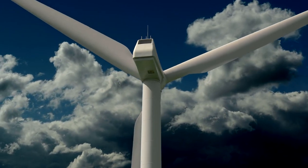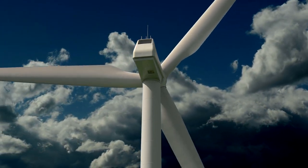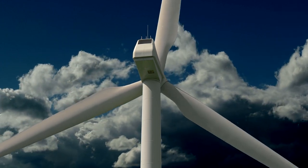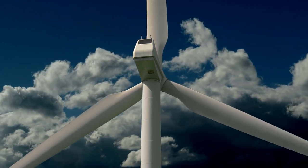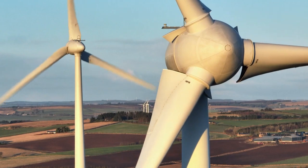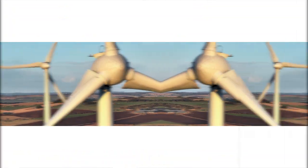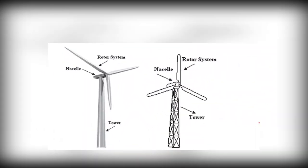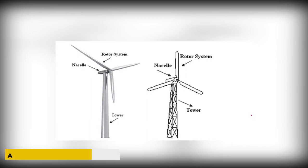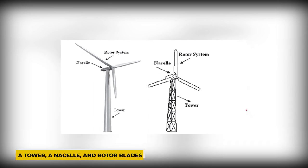Wind turbine power generation is based on the conversion of the wind's kinetic energy into mechanical energy and electrical energy. This is done using specially designed rotor blades, hubs, and generators. A wind turbine consists of three main parts: a tower, a nacelle, and rotor blades.